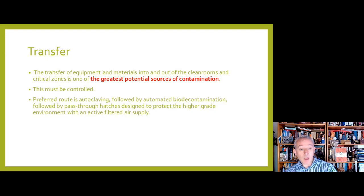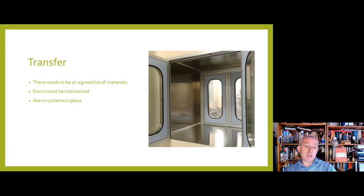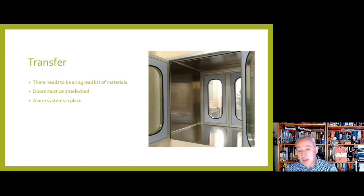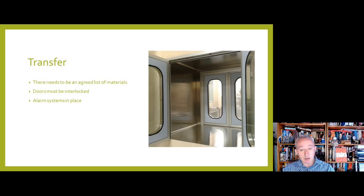Only materials and equipment that appear on an approved list — approved by the quality department — can go into the clean room. These need to be developed during the validation of the transfer process, which should account for all the different types of items going in. This is particularly important for entry into a grade B clean room or a grade A area, and must be controlled with those appropriate measures.